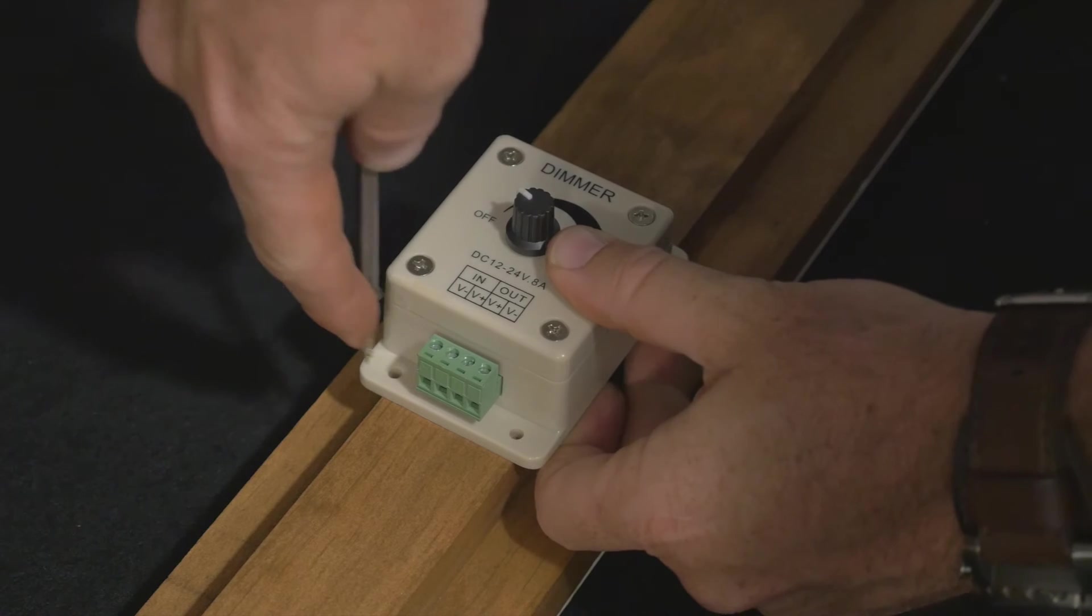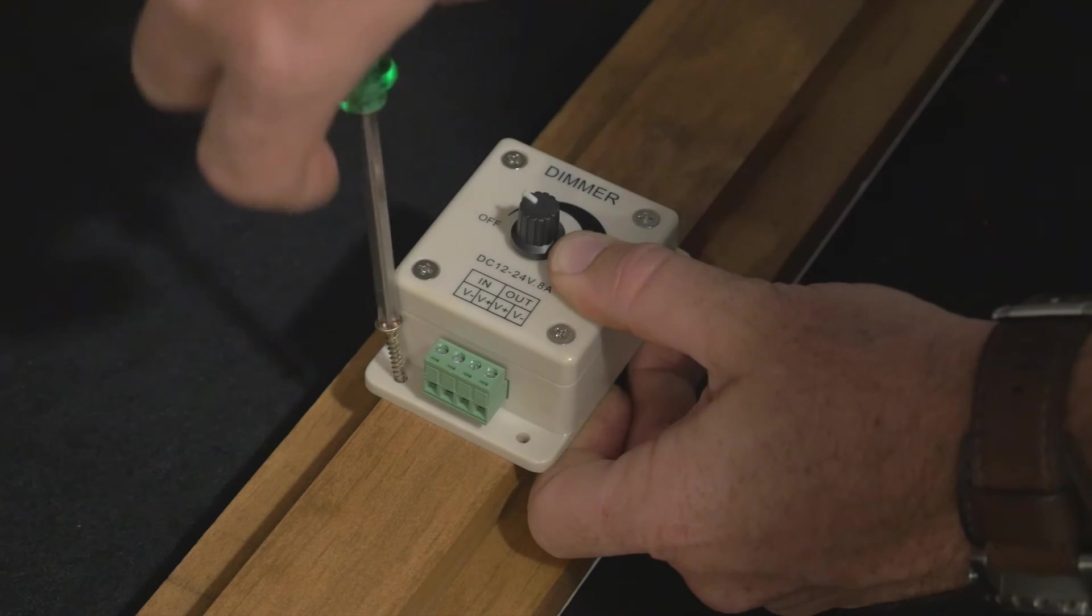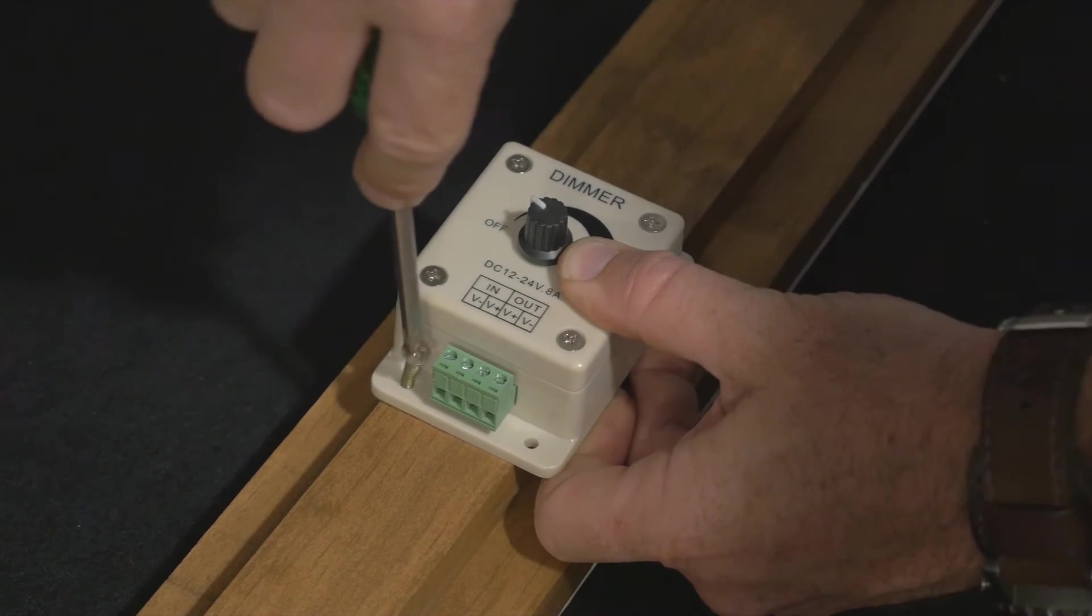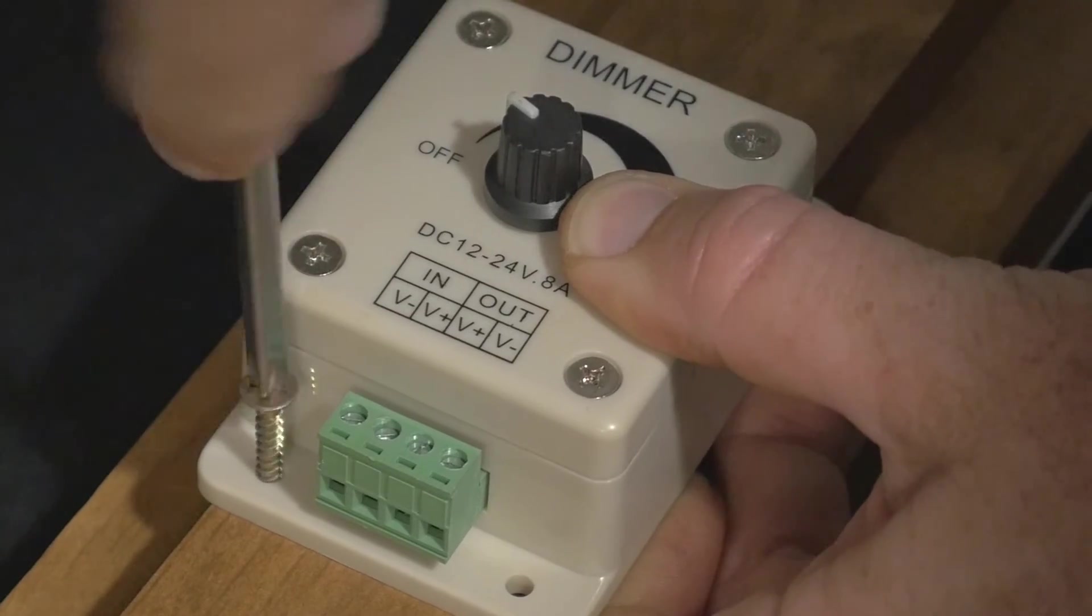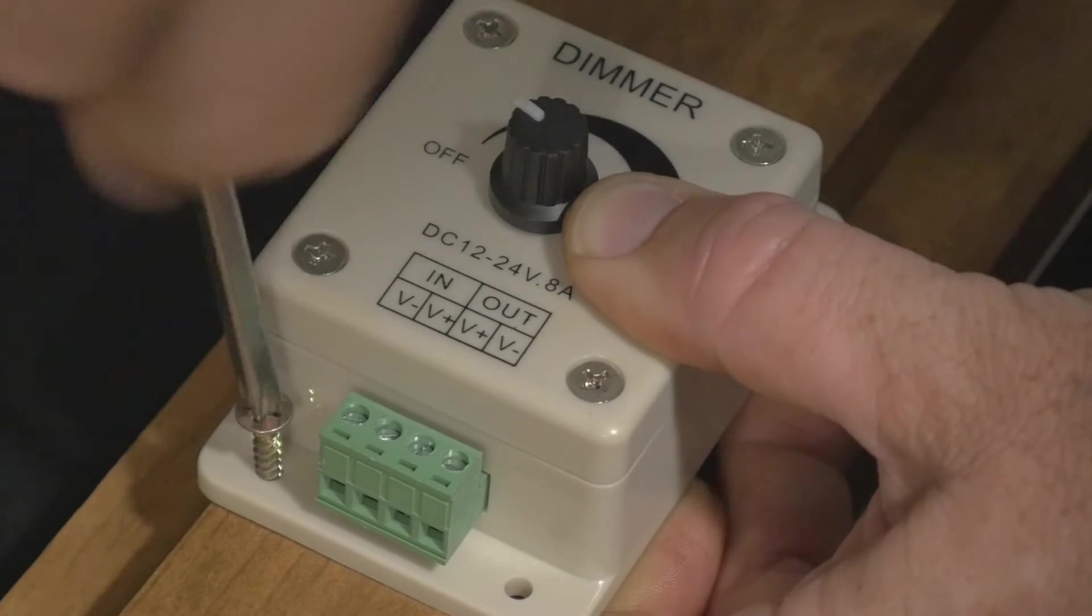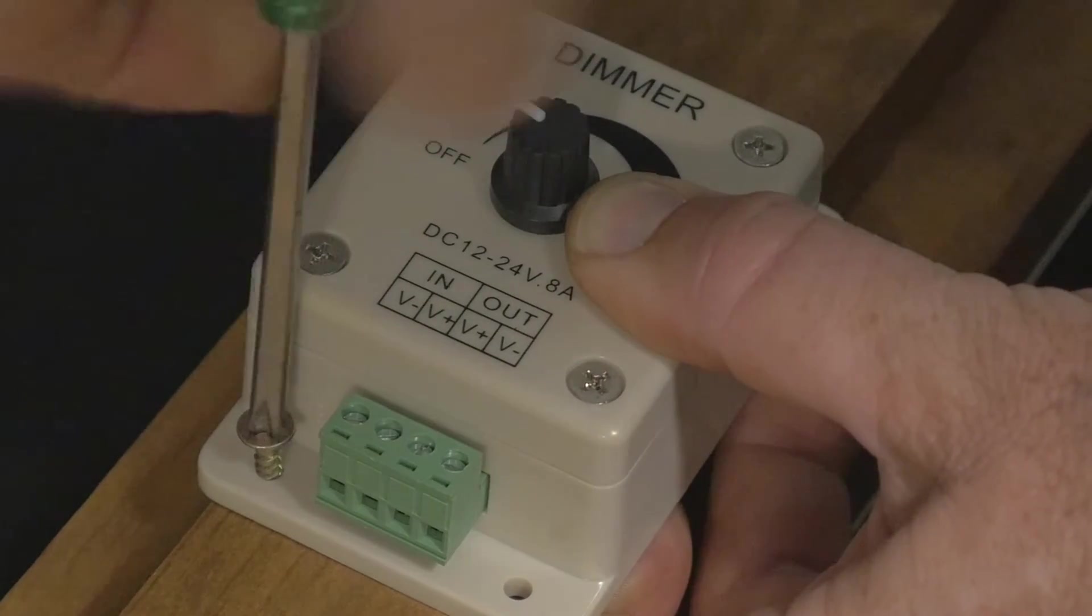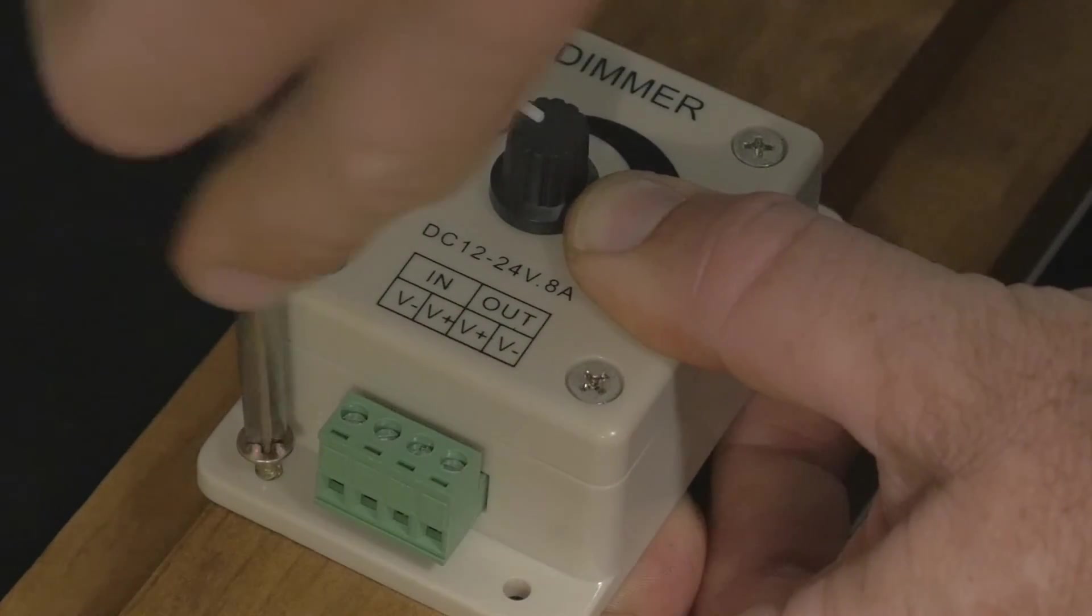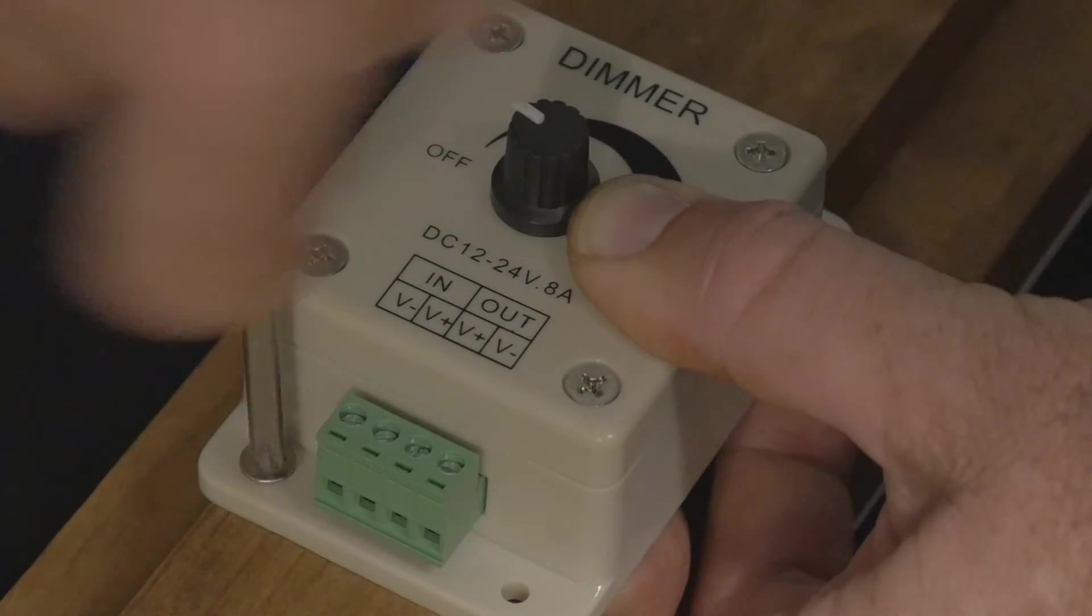The next thing we're going to do is we're going to attach the dimmer switch. Now the dimmer switch I'm using, you don't have to use the same model that I'm using. I got this on eBay for four dollars and it's really good. In the documents in the description area I do actually have the links to the eBay auctions for them.